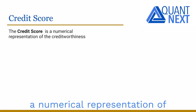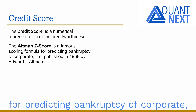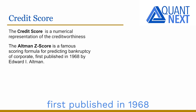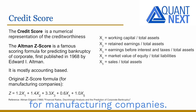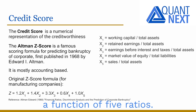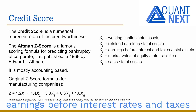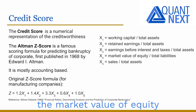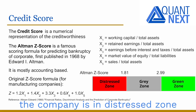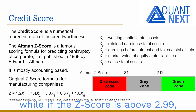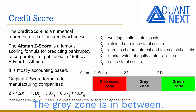The credit score is a numerical representation of creditworthiness. The Altman Z-score is a famous scoring formula for predicting the bankruptcy of corporates, first published in 1968 by Edward Altman. It is mostly accounting-based. The Z-score of a company is a function of five ratios: the ratios to total assets of working capital, retained earnings, earnings before interest and taxes, and sales, plus the ratio of the market value of equity to total liabilities. If the Z-score is below 1.81, the company is in the distress zone with a higher risk of default. If the Z-score is above 2.99, the company is in the green zone with a low risk of default. The gray zone is in between.